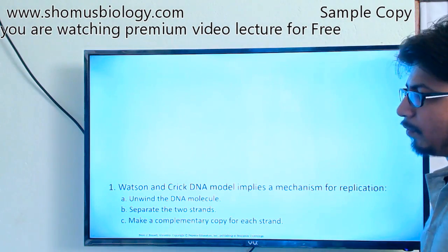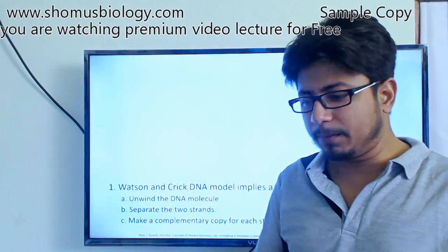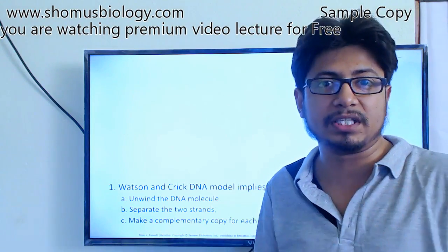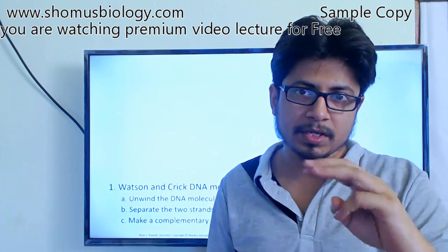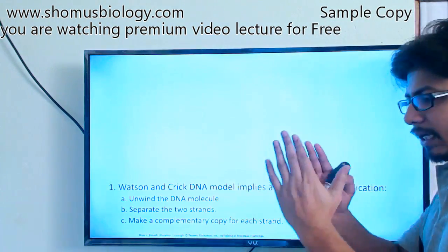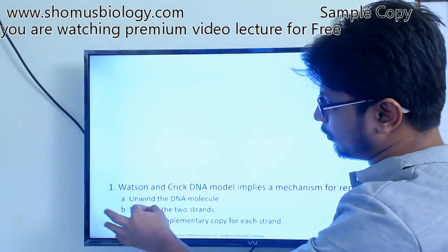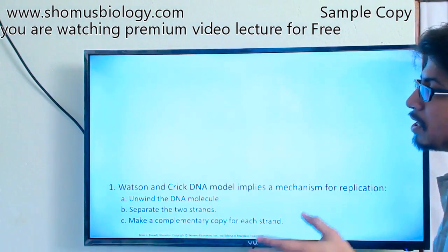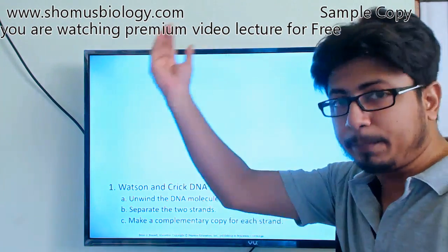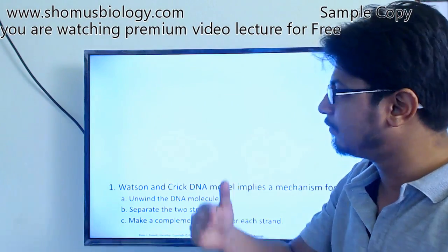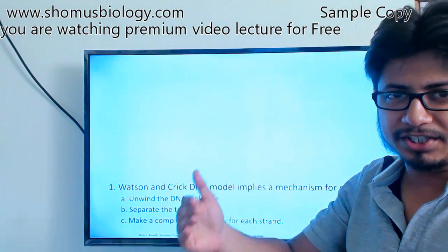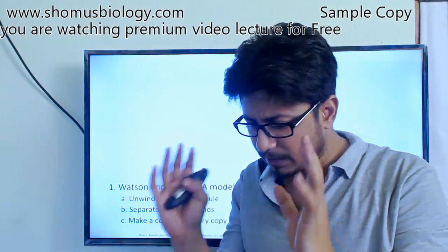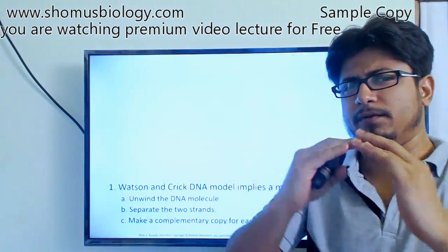The idea from Watson-Crick pairing is that the bases have complementarity — A pairs with T, G pairs with C. A pairs with T with two hydrogen bonds, and G pairs with C with three hydrogen bonds. So they are complementary in nature. For example, if one strand of DNA reads 5' A, A, C, T, the opposite strand will be 3' T, T, G, C — that is the complementary sequence.